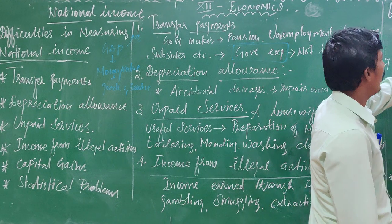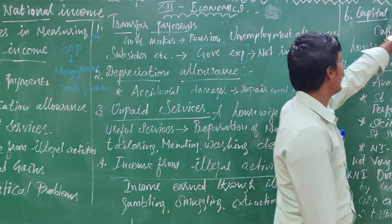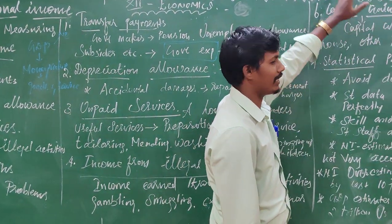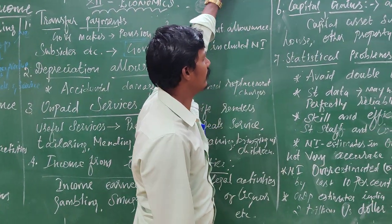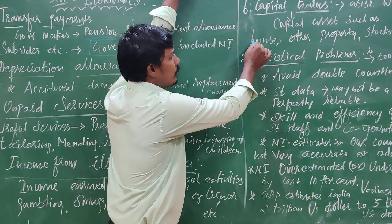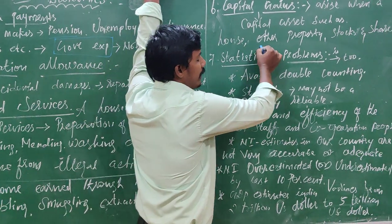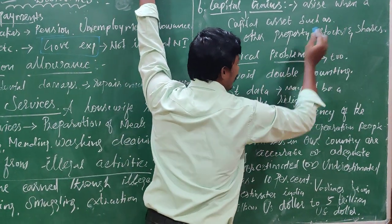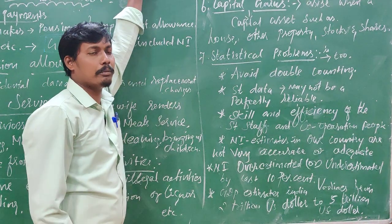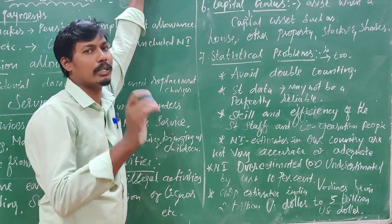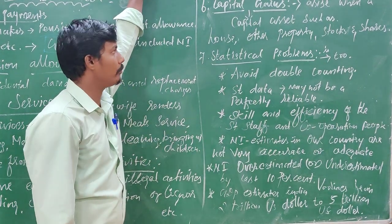Fifth: capital gains. Capital gains arise from assets such as house, other properties, stocks and shares. There are three types of capital gains, and they are generally excluded from national income measurement.